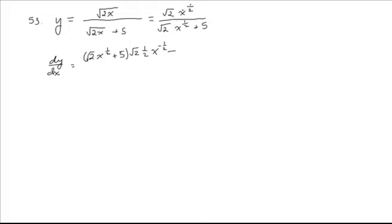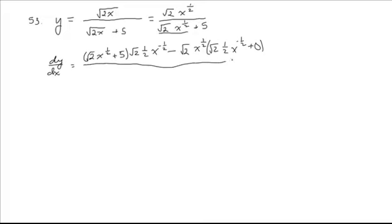Minus — now we'll leave the numerator alone. So square root of 2 times x to the 1 half, times the derivative of the denominator. The derivative of the denominator — notice that this term is the same as in the numerator, so the derivative is going to be the same: square root of 2 times 1 half x to the minus 1 half. The derivative of 5 by itself is 0. And there is our numerator, all over square root of 2 times x to the 1 half plus 5, the quantity squared.